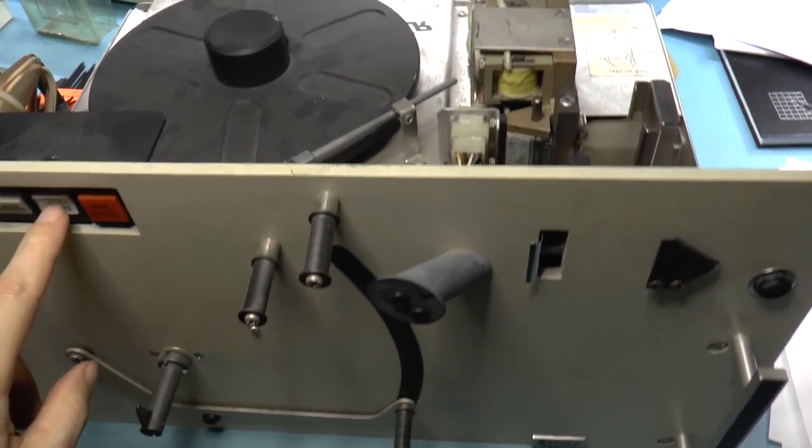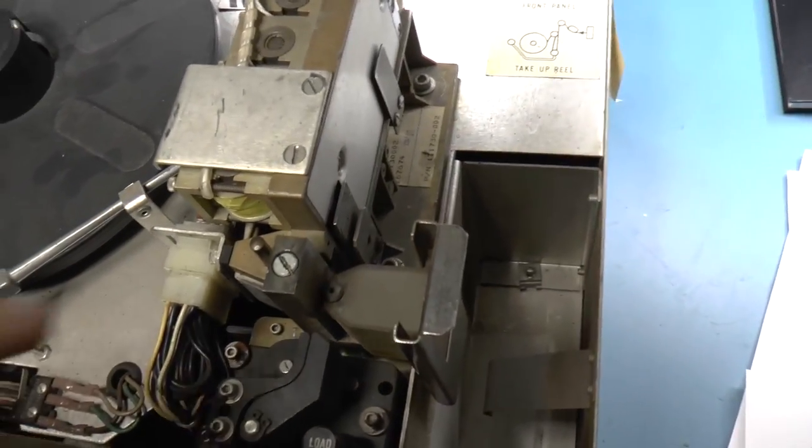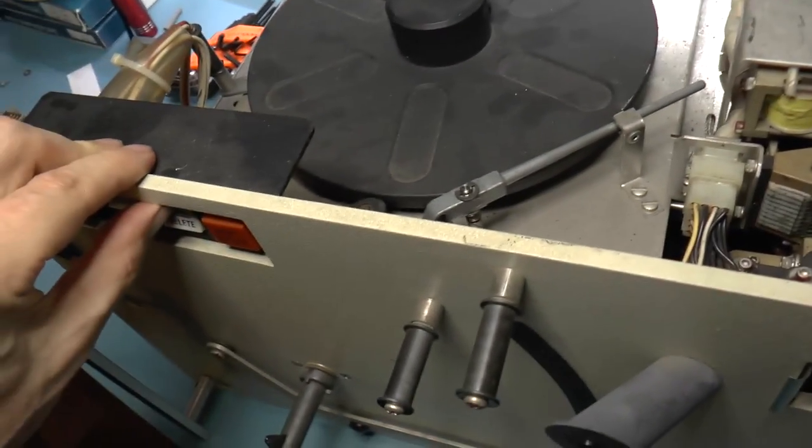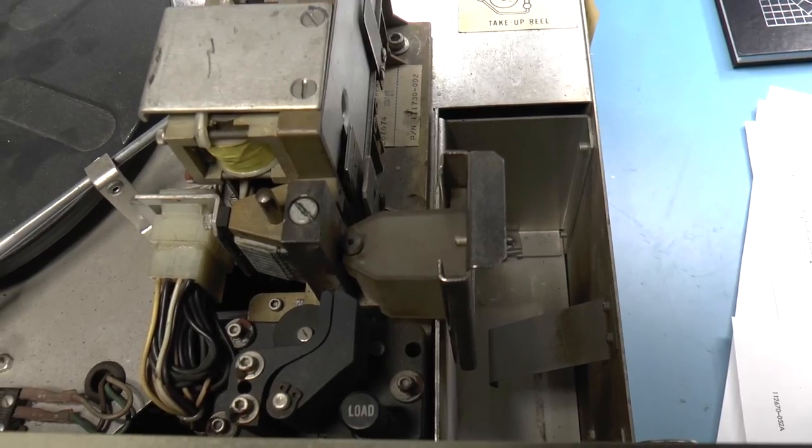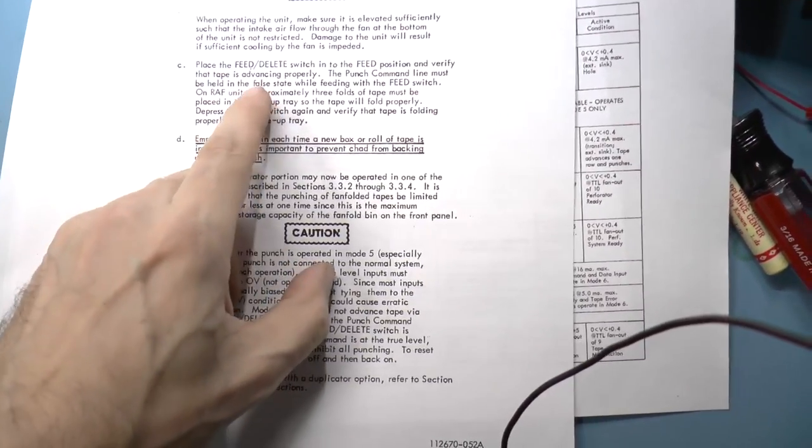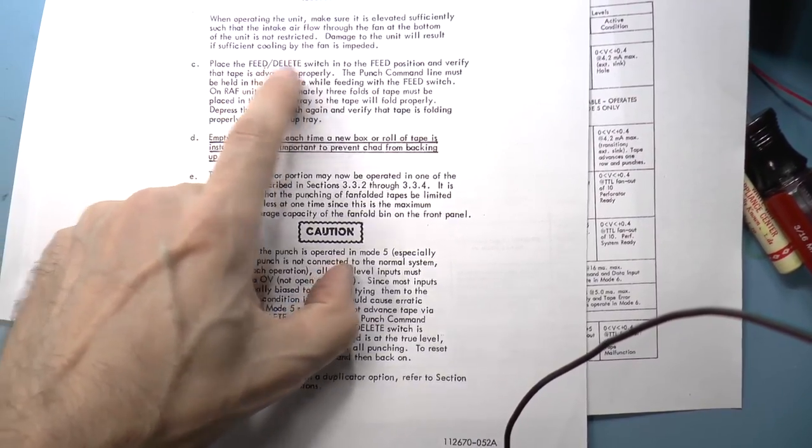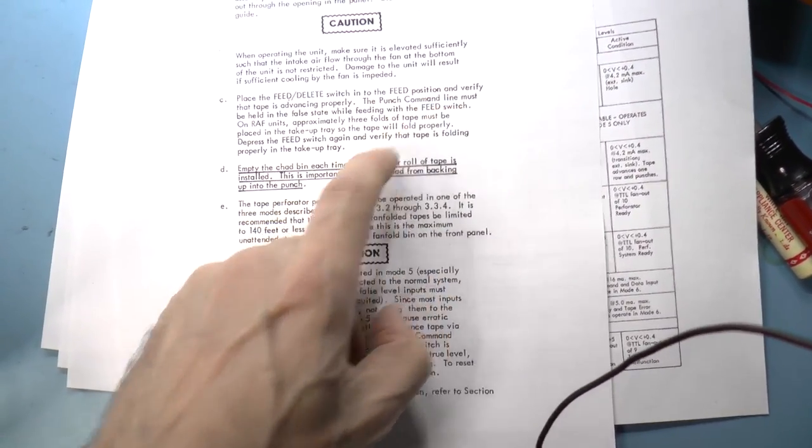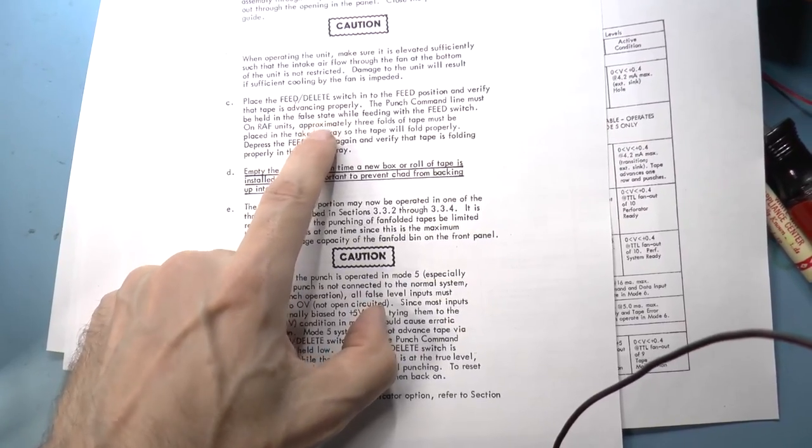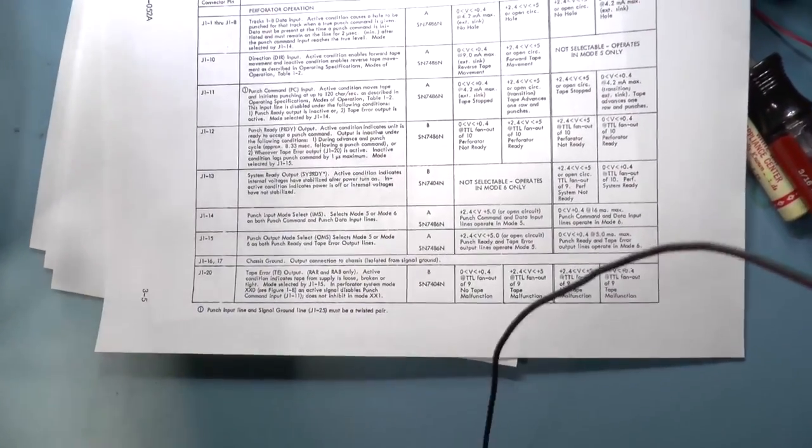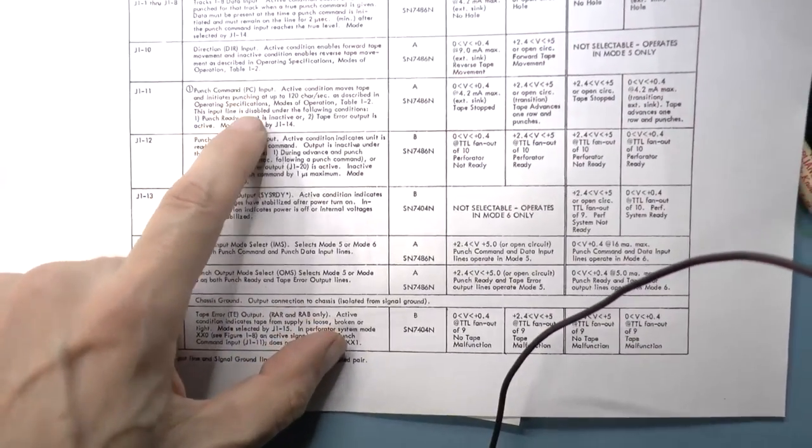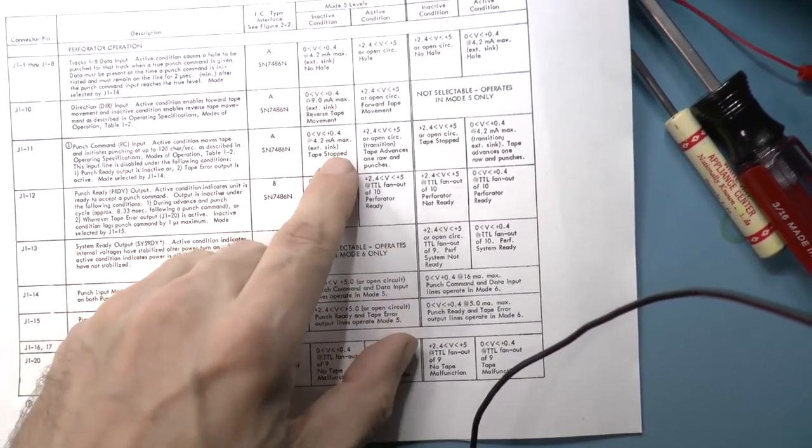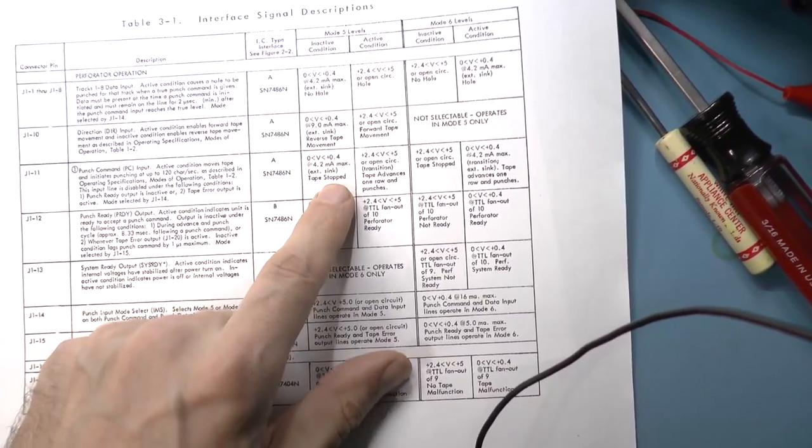So according to the manual, you should just be able to press the feed button and this thing should just start pulling tape. But I'm pressing the feed button and nothing is happening. So why is that? So according to the manual, you should again, just be able to put the switch in feed and the tape should advance. But it also says that the punch command line must be held in the false state. Now if we look at the punch command input, that's here, it says it must be held in the false state, which I believe means the inactive position, condition.